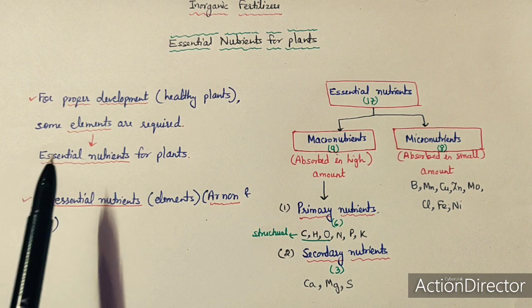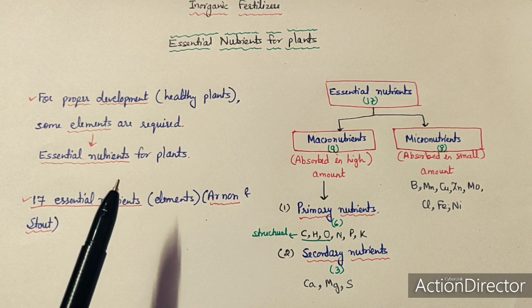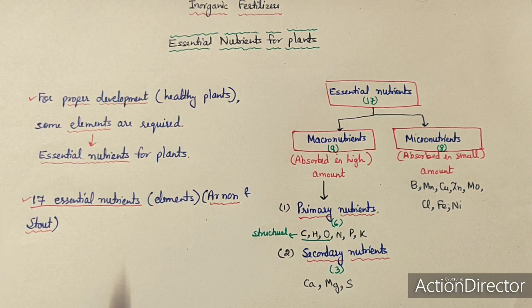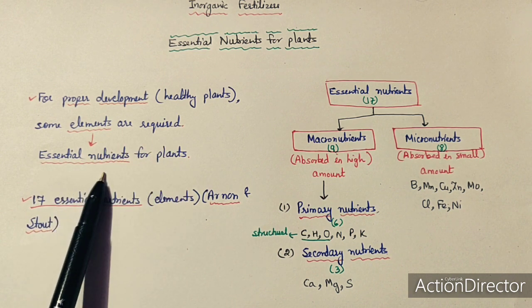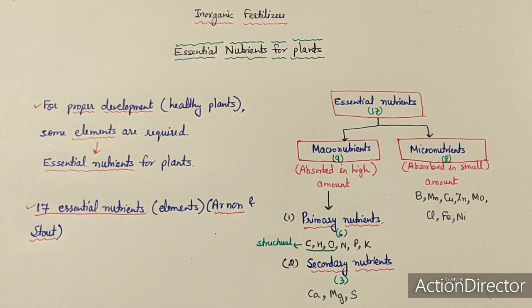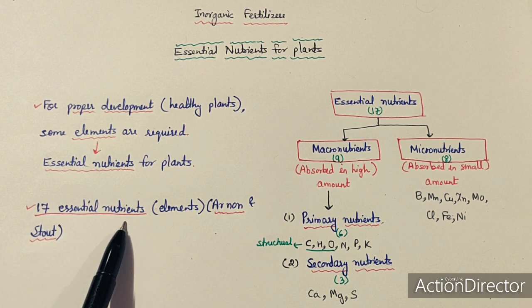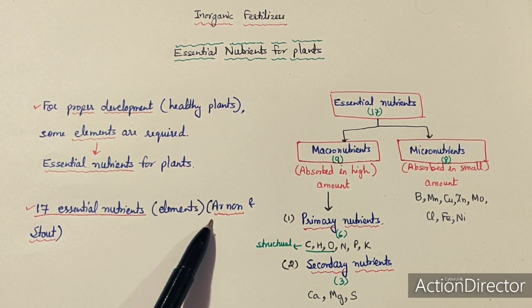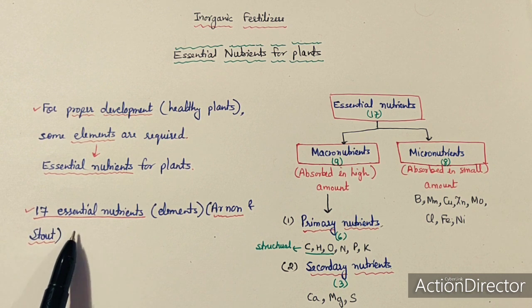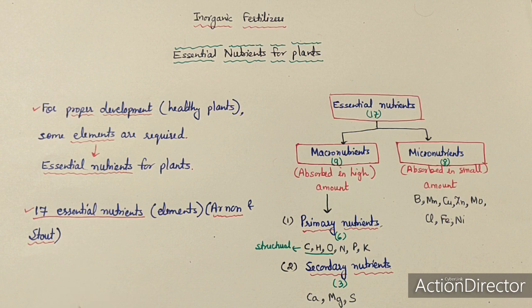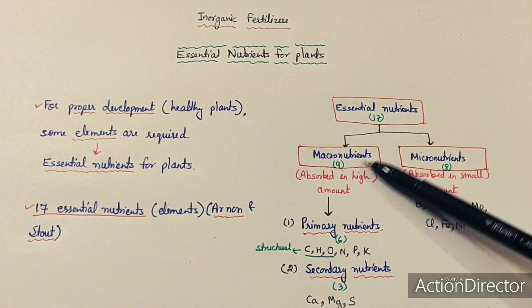For proper development and a healthy plant, it is necessary that the plant receives proper nutrients — just like human beings need proper nutrition. There are 17 essential nutrients for plants, known as essential elements. R. Arnon and Stout identified these 17 elements essential for plant growth. These 17 essential nutrients are divided into two types: macronutrients and micronutrients.